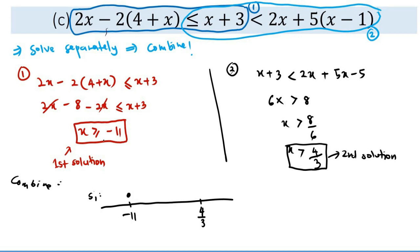Our first solution, which I will name S1, should go to the right. Remember your chapter 1. Greater than or equal to negative 11, so to the right over there. Meanwhile, for our second solution, we would have something like greater, but not equal to, 4 over 3.